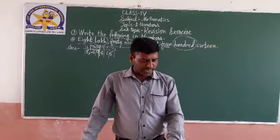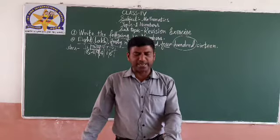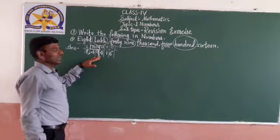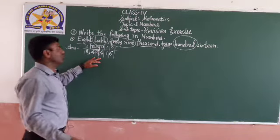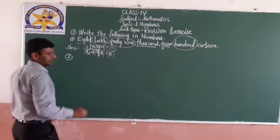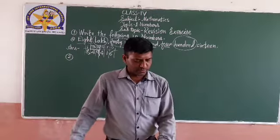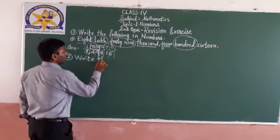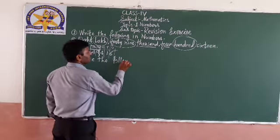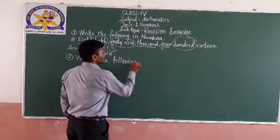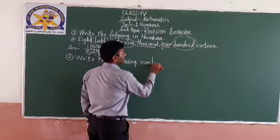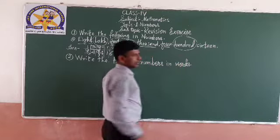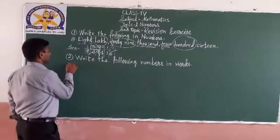Write the following numbers in words. Now previously numbers were given in words and we wrote in numerals. Now numerals are given and we will have to write in words. So what is question number 2? Write the following numbers in words. Numbers are given.